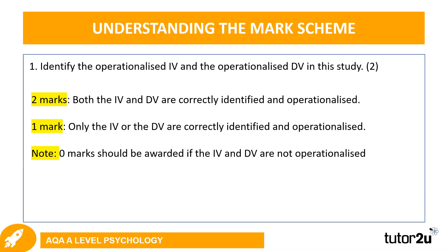Question one was to identify the operationalized IV and the operationalized DV in this study — two marks available. You get two marks for identifying both the IV and DV in operationalized form. One mark if only the IV or the DV were correctly identified and operationalized. Zero marks if the IV and the DV are not operationalized, so you must write them in an operationalized format.